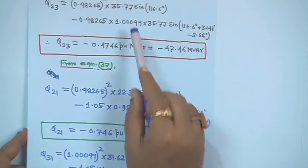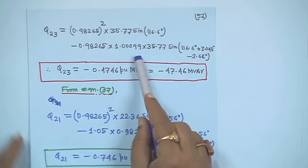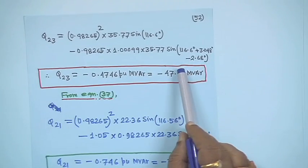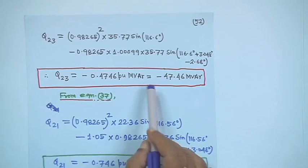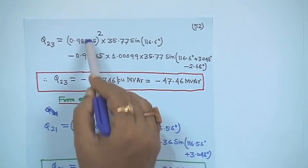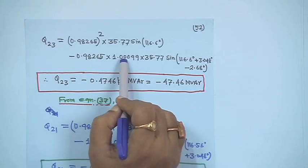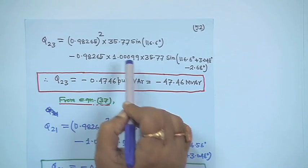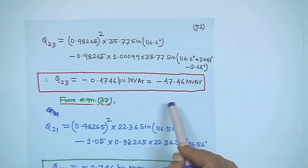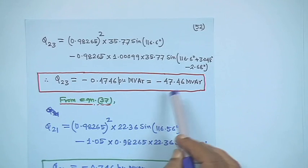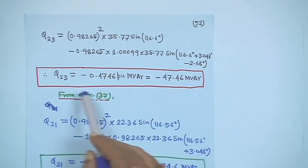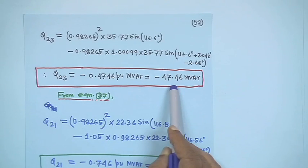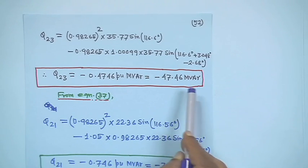Similarly, Q₂₃ is computed the same way. All the details have been explained, so you can do it on your own. Q₂₃ will become minus 47.46 megawatt.